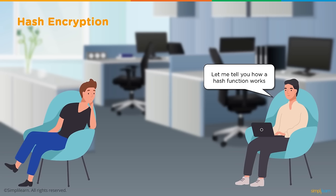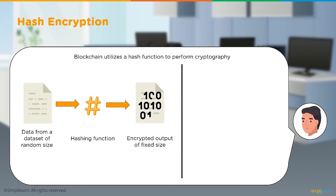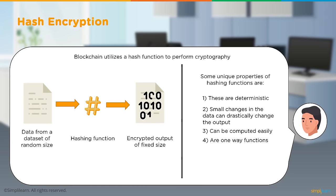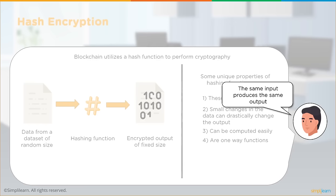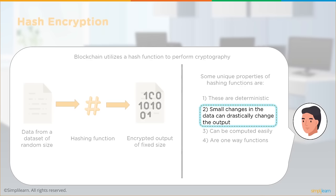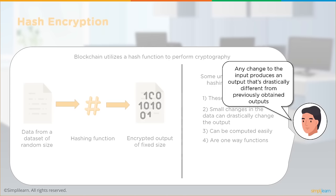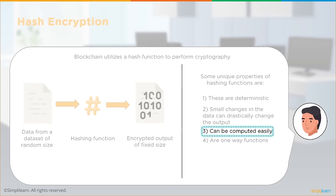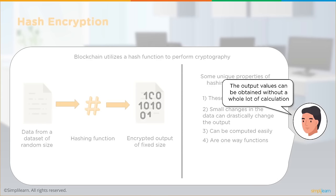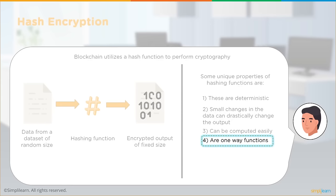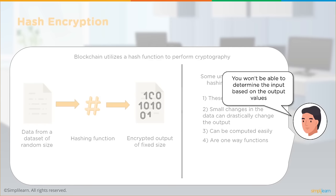Blockchain uses a hash function to perform cryptography: data of random size is sent as input to produce an encrypted value of fixed size. Key properties of hashing functions: they are deterministic — same input always produces same output; small input changes drastically change the output; they are easily computed; and they are one-way functions — you cannot determine the input from the output, so reverse calculation is impossible.